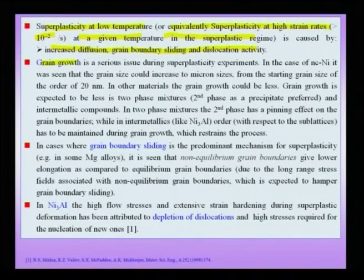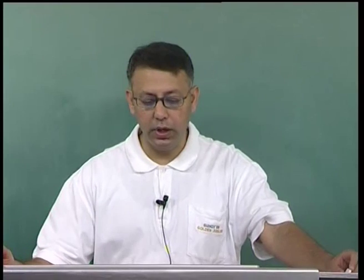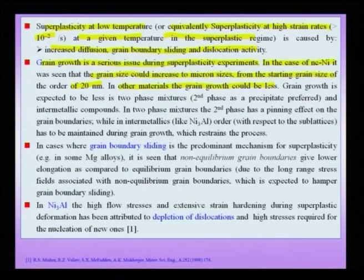Like in creep, grain growth is a serious issue during super plasticity experiments. If grain growth occurs and the expected mechanism is grain boundary sliding, the elongations obtained will be limited. In nano-crystalline nickel, grain size could increase from about 20 nanometers to micron sizes during testing — a very serious issue. Even in other experiments where grain growth is less dramatic, it never the less could have taken place and always reduces available ductility.